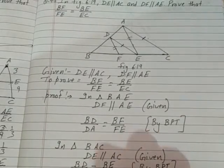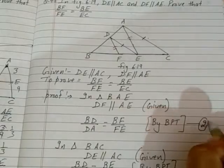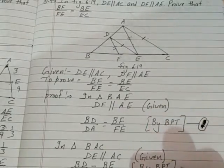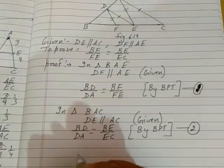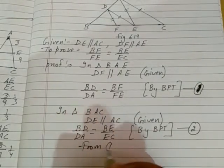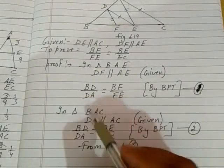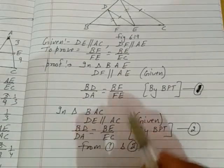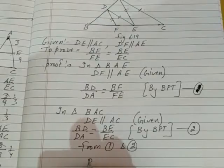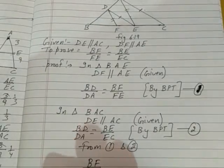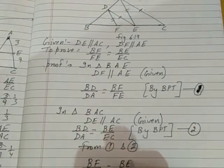From equations 1 and 2, BD/DA equals BF/FE and BD/DA equals BE/EC. Therefore, BF/FE equals BE/EC.